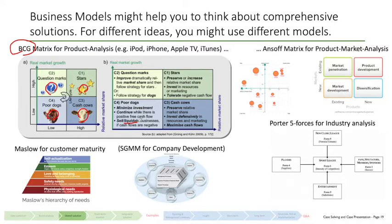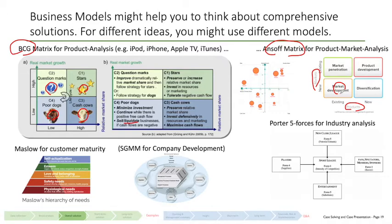Related to product orientation would be the Ansoff matrix, which looks at the options we have for new markets or new products — existing markets, new markets, existing products, and new products — giving us four typical quadrants. Each quadrant, like market development, might require a specific set of 'how' activities. We first decide which quadrant to move into, then look at theory for the best 'how' approaches.